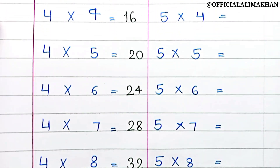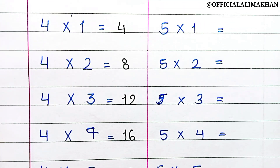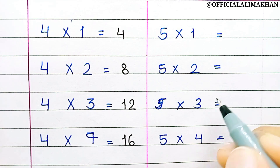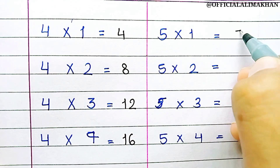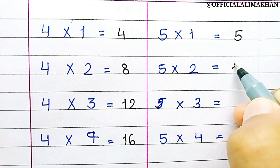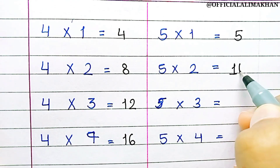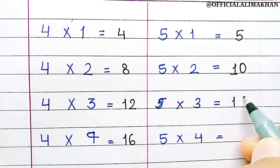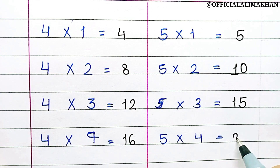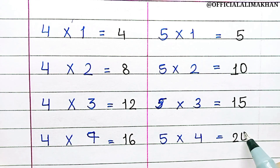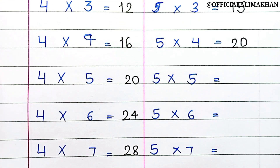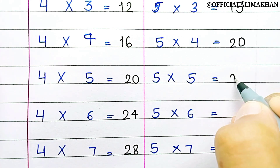5 1s are 5, 5 2s are 10, 5 3s are 15, 5 4s are 20, 5 5s are 25.